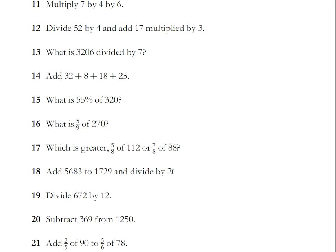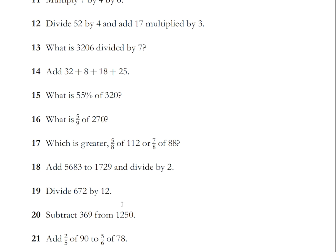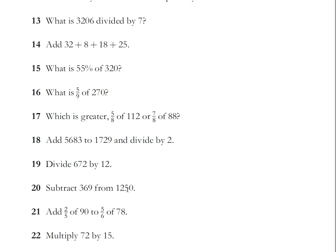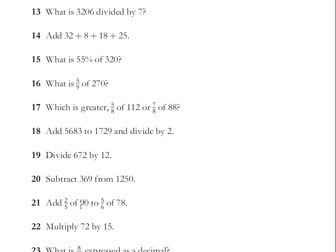Which is greater, 5/8 of 112 or 7/8 of 88? 112 divided by 8 is 14, so 5/8 is 70. 88 divided by 8 is 11, 7 times 11 is 77, so 7/8 is greater, 77 to 70. Add 5683 to 1729 and divide by 2. I'll add the 1700 first, that's 7383, add the 29, 7412, divide by 2, 3706. Let me check - add 29 to 5683 that's 5712, plus 1700 is 7412, yeah 3706. Divide 672 by 12, that'd be 56.